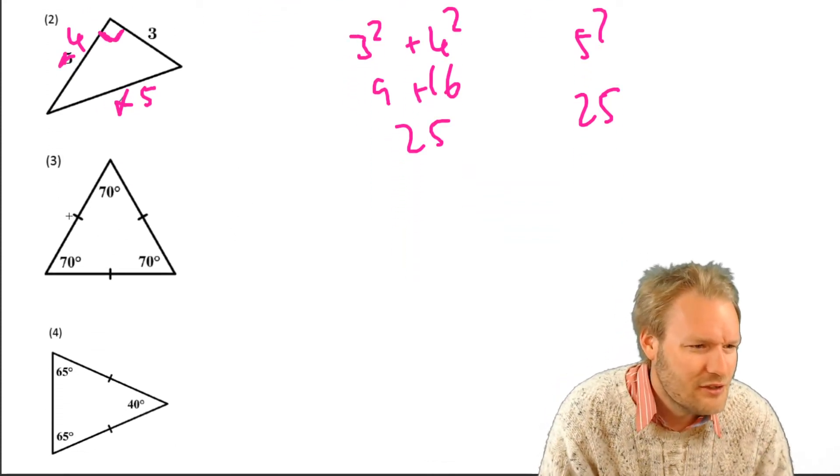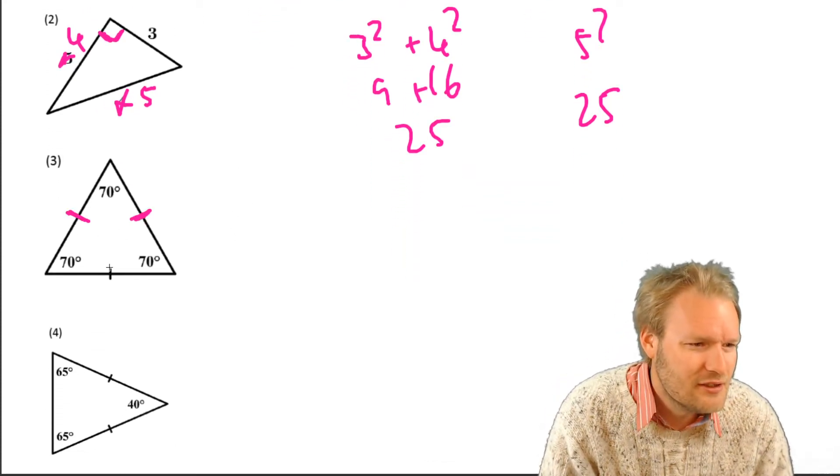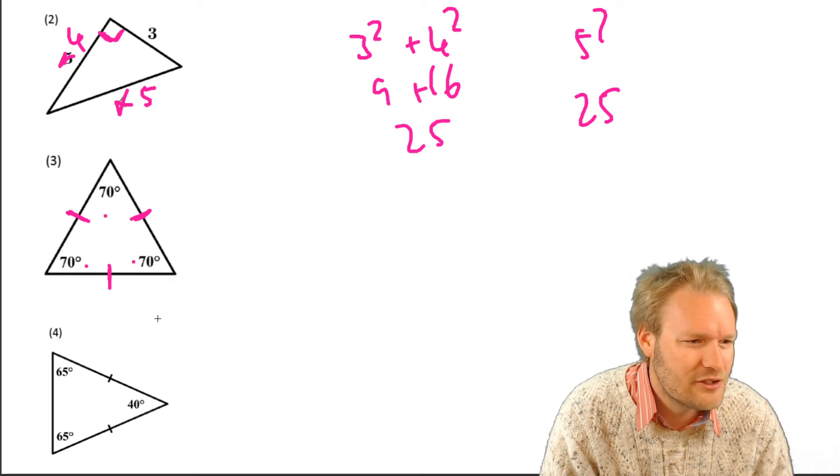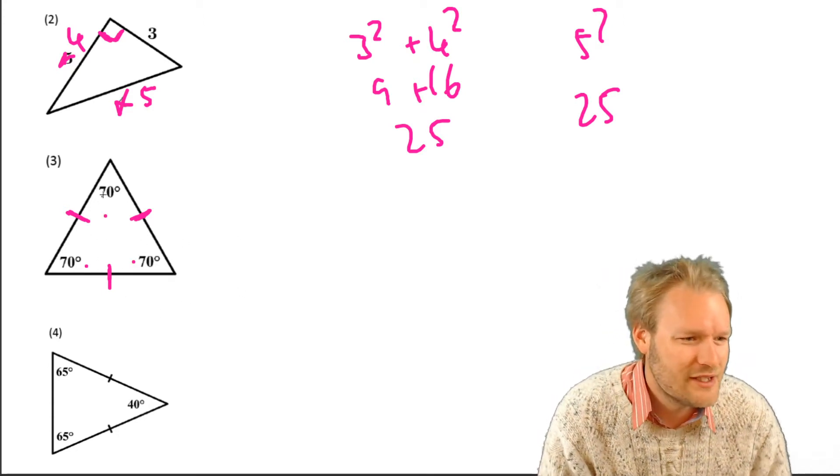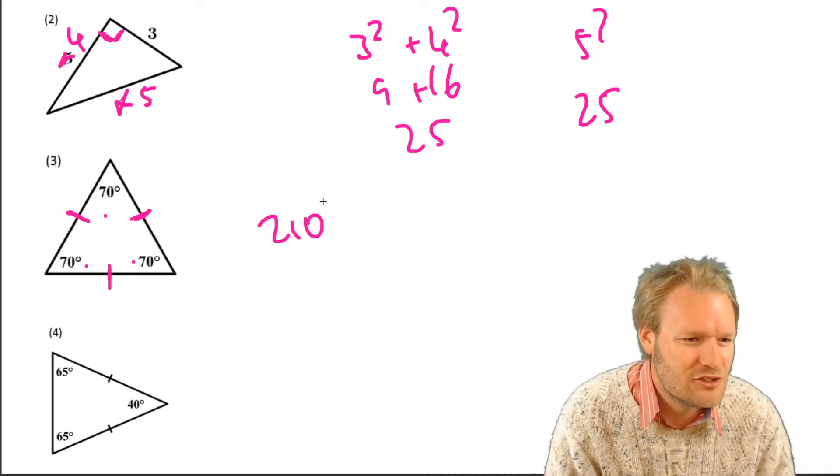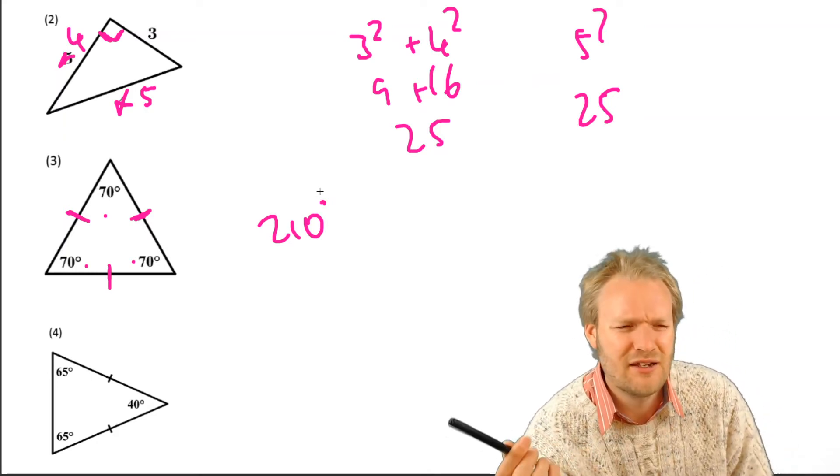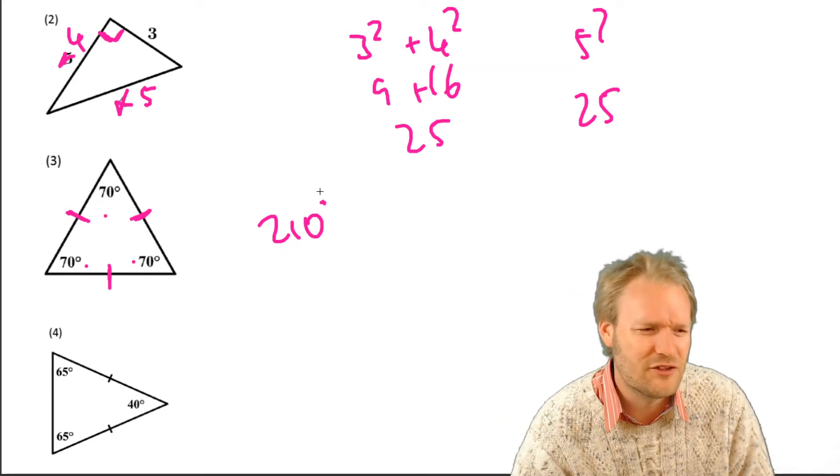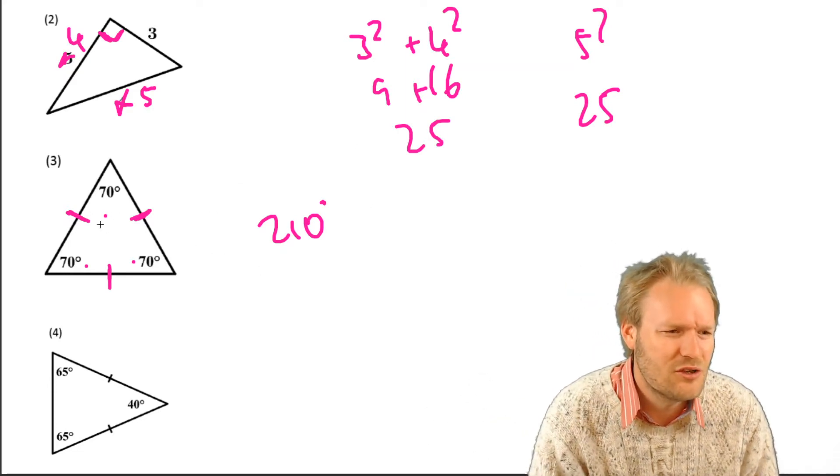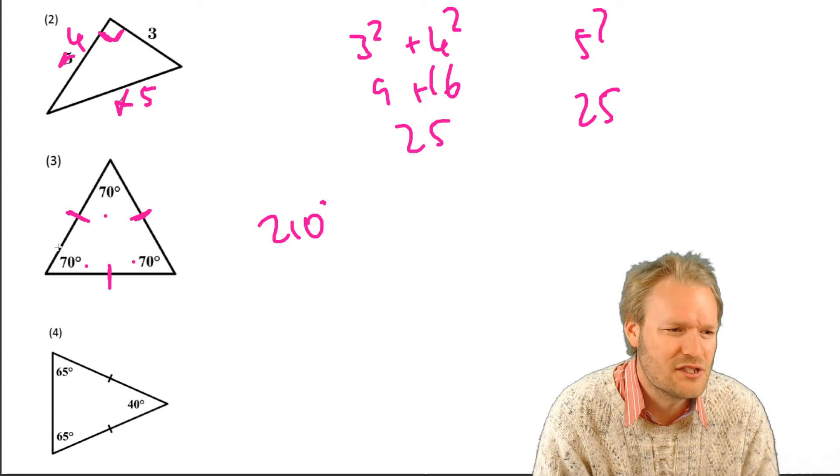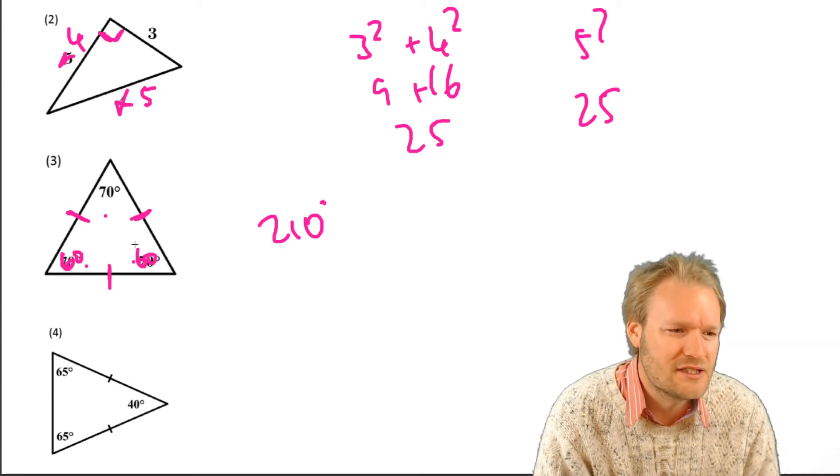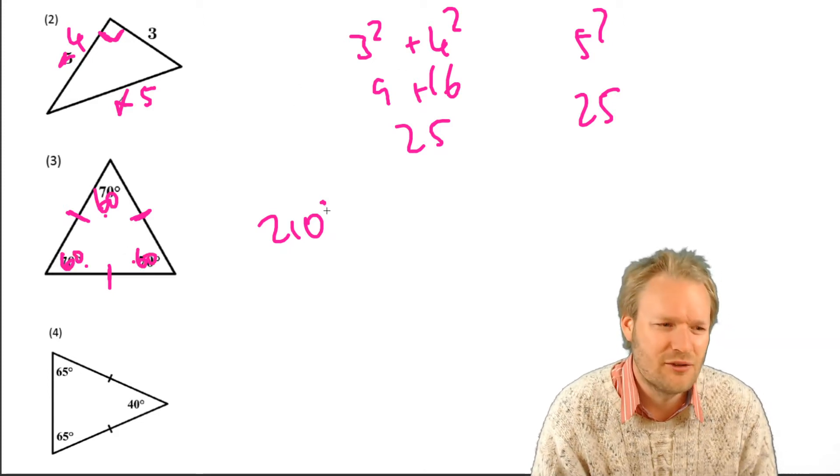Okay, we've got 3 equal sides, which means 3 equal angles. Great stuff. So 70, 70, 70. These add up to... Right. Angles in a triangle should add up to 180. And we've seen an equilateral triangle by now. We saw it in the first question. So we know that equilateral triangles, this should have been 60, 60, 60 to make it an equilateral triangle.